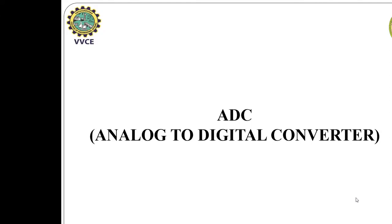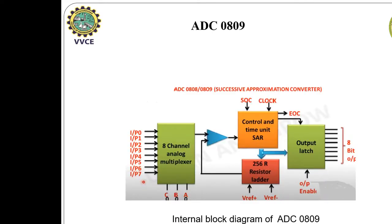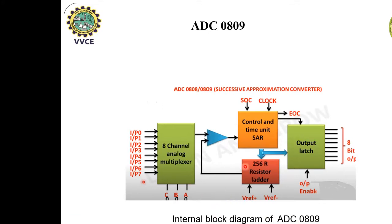Today's session deals with FPGA Implementation of Analog to Digital Converter Interface with Verilog HDL. To begin with, this is the internal block diagram of an ADC0809 which consists of an 8-channel analog multiplexer, control and timing unit, 256 resistor ladder output latch. A successive approximation converter is used inside this ADC0809.